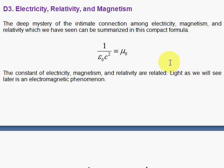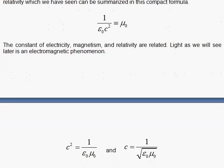Let's bring the c squared over and bring that constant of magnetism to the denominator and take the square root, solving for the speed of light.